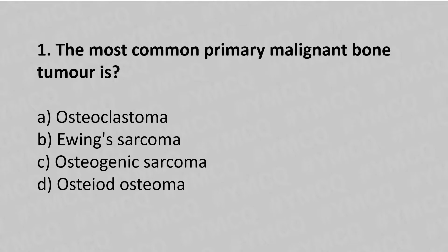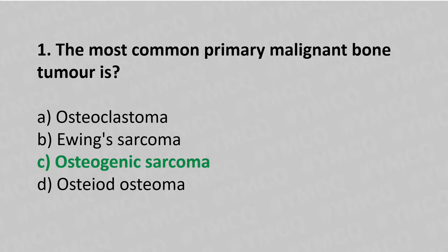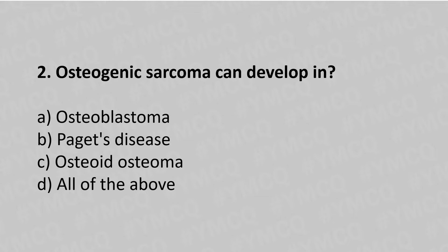Question 1: The most common primary malignant bone tumor is — option A: osteoclastoma, option B: Ewing sarcoma, option C: osteogenic sarcoma, option D: osteoid osteoma. The answer is option C: osteogenic sarcoma.